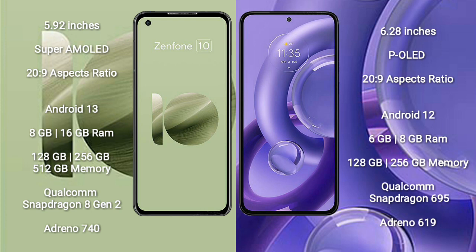Motorola S30 new comes with 6GB or 8GB RAM and 128GB or 256GB internal storage. It features a Qualcomm Snapdragon 695 processor and Adreno 619 GPU.